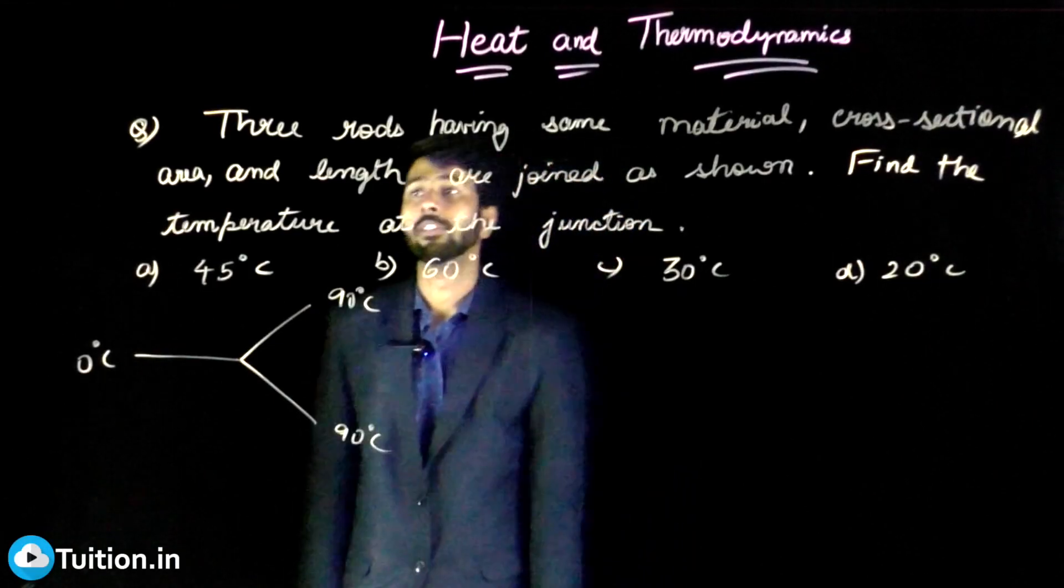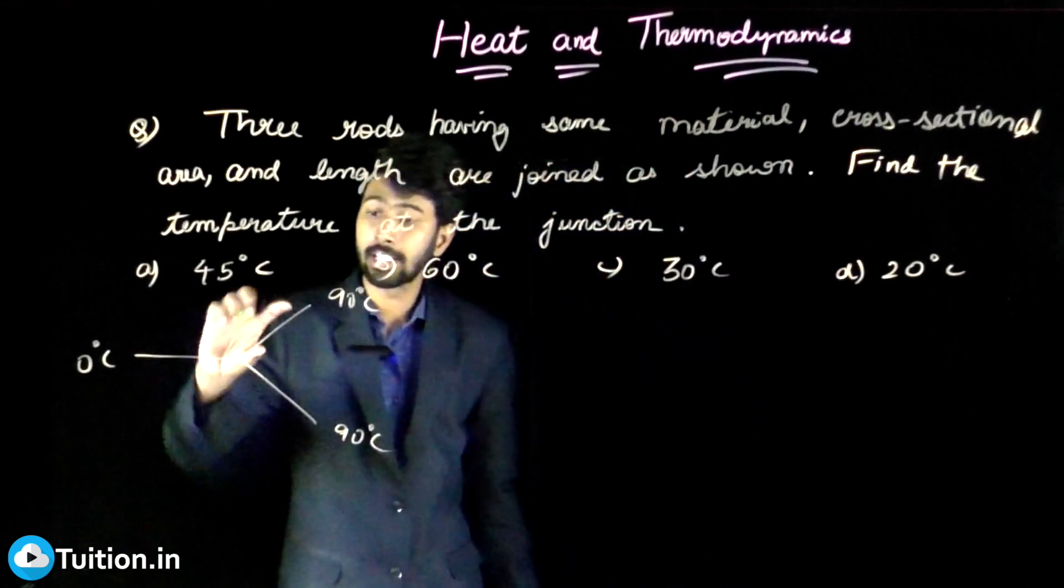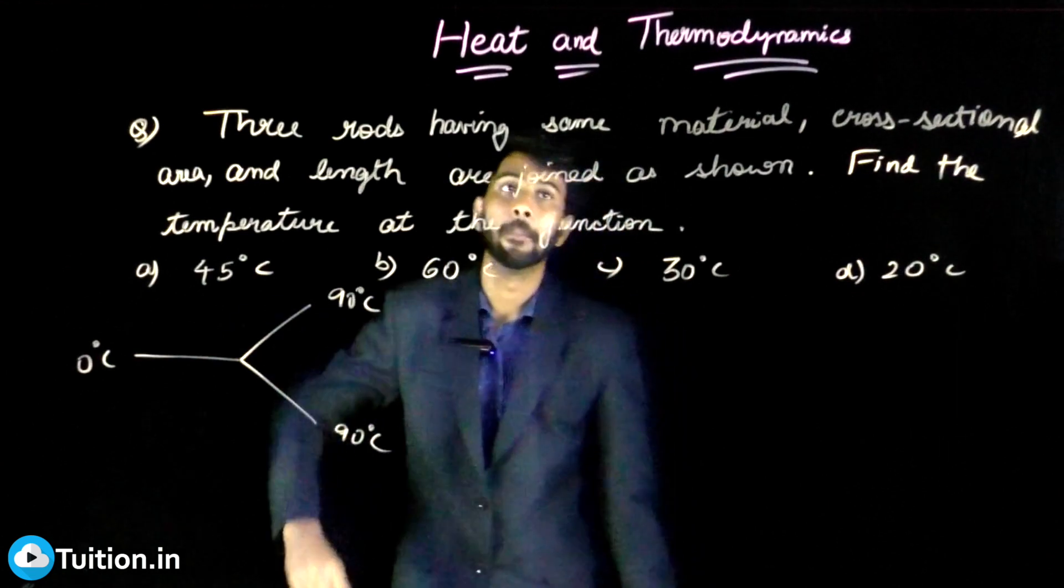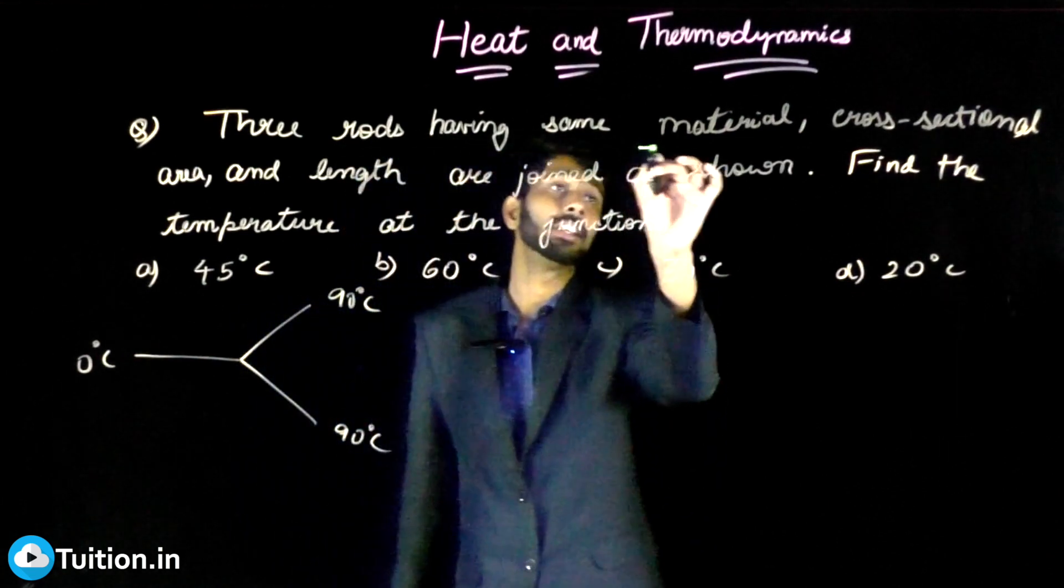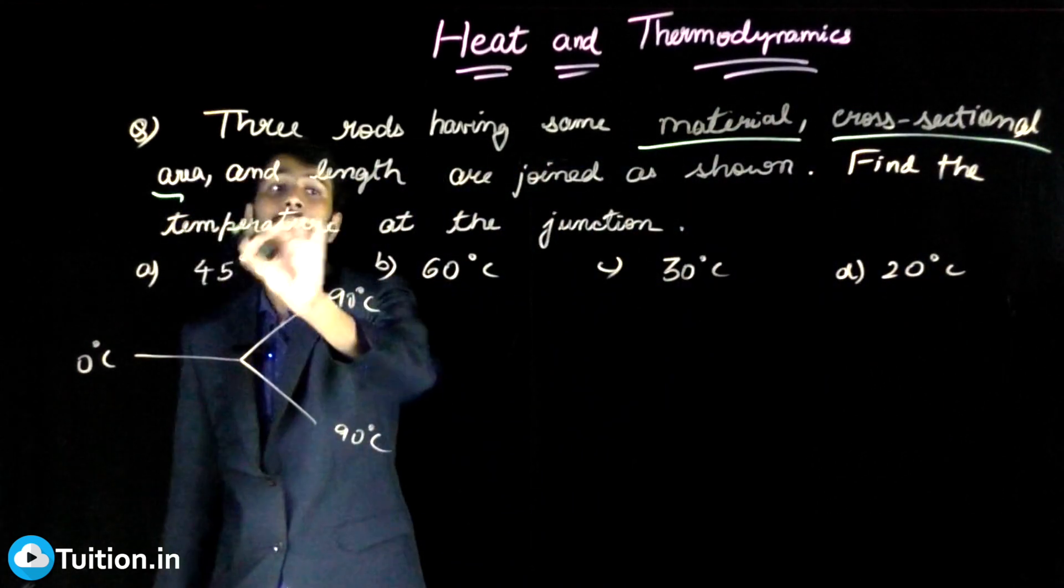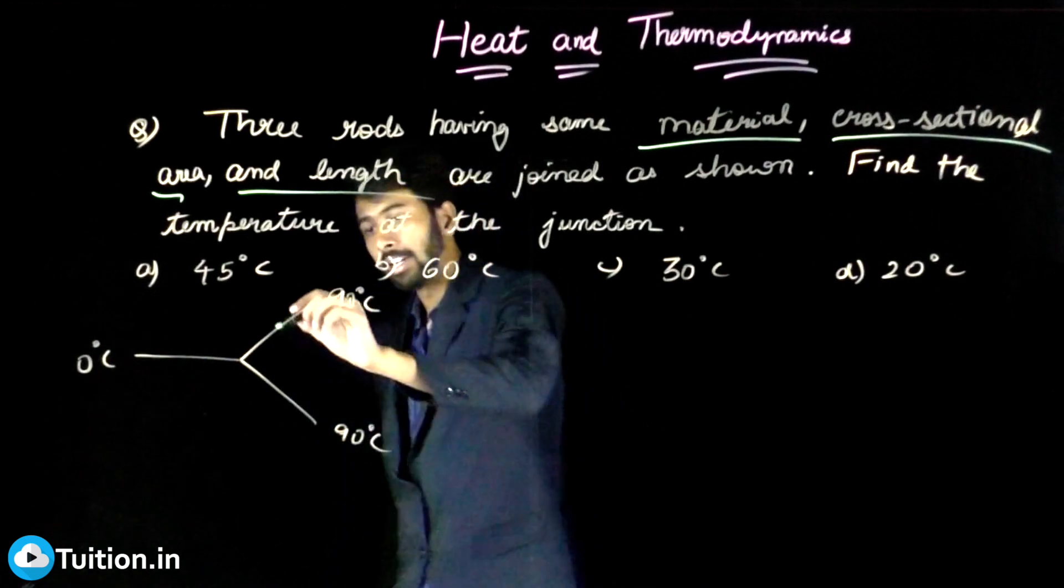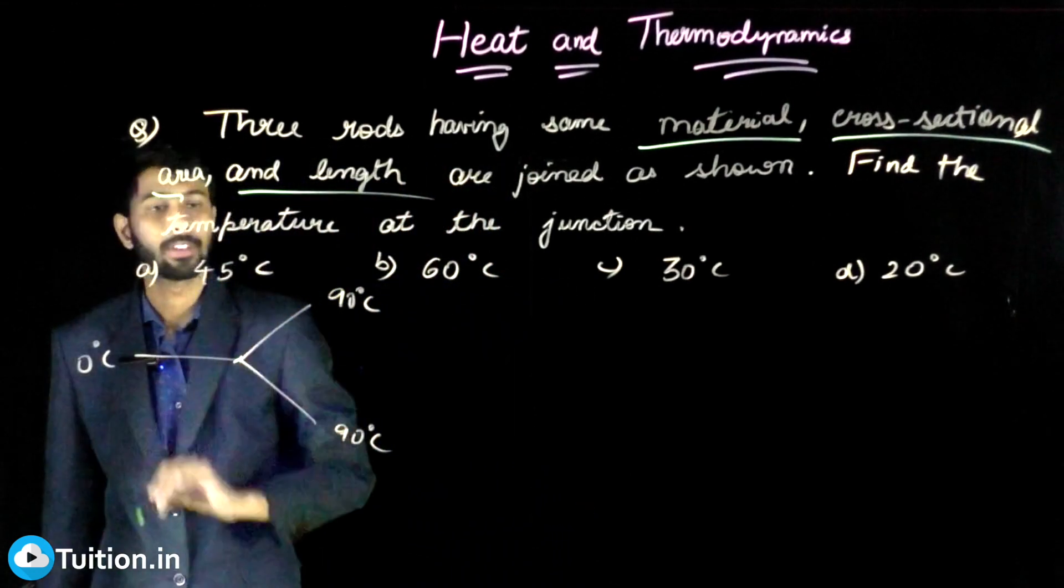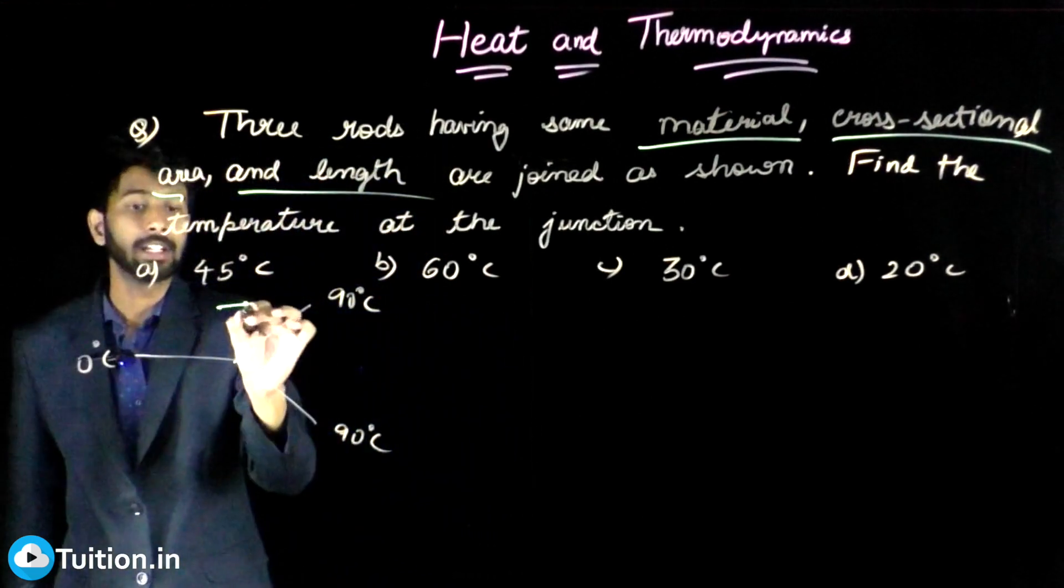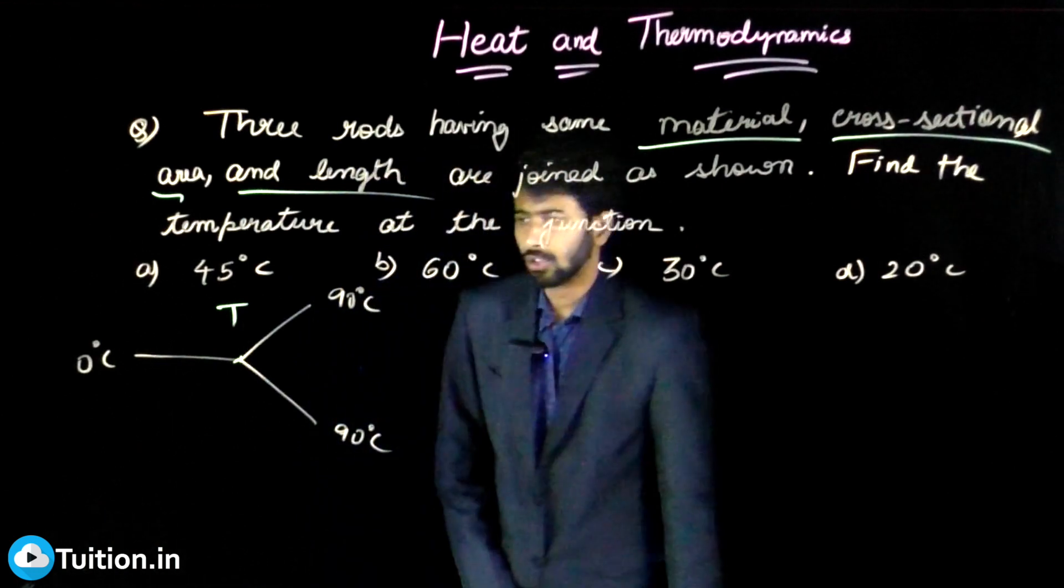Let's look at this previous problem from the topic heat and thermodynamics. There are three rods joined in this manner. All of them have the same material, the same cross-sectional area, and the same length. You need to find the temperature at this junction. Let the temperature at the junction be T, and let's start with the concept.